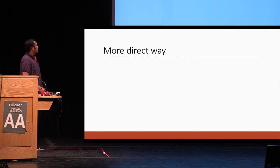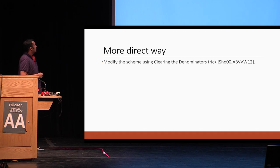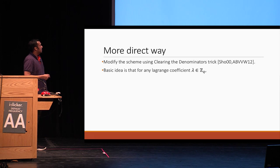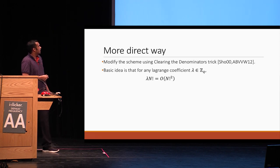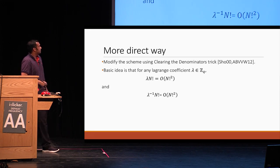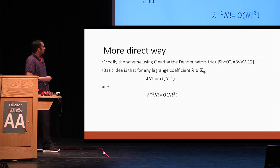The second approach is known as the clearing the denominators trick. The basic idea is that any Lagrange coefficient lambda is just a ratio of products of bounded integers, computed over Z_Q. When you multiply this Lagrange coefficient by N factorial, due to some cancellations, what you get is a bounded integer. You can show the same thing for lambda inverse. We use this idea to build the scheme, and I refer you to the paper for the details.